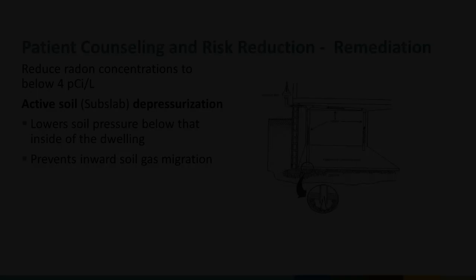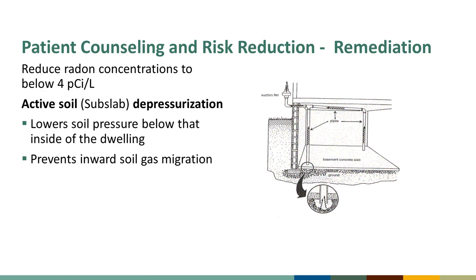If an elevated level of radon is found in the patient's home, there are ways to reduce radon exposure. Radon reduction, or remediation, uses methods to reduce radon concentrations to below the EPA-recommended action level of 4 picocuries per liter using active soil depressurization, or ASD, in existing dwellings. ASD can also be built into new dwellings as a proactive measure. Active soil subslab depressurization with suction lowers the soil pressure below that inside the dwelling and prevents inward soil gas migration. Pipes attached to a suction fan are inserted into the ground below the basement floor, creating a low-pressure region under the dwelling. This depressurization is one of the most effective methods of lowering radon levels and can reduce indoor radon levels by as much as 99%.